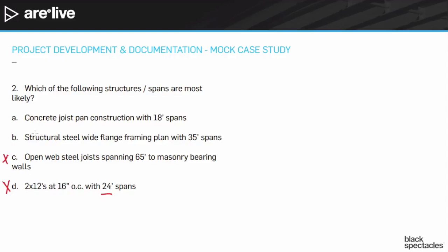So the most likely answer in this scenario would be the wide flanges with a 35-foot span. Wide flanges have a sweet spot anywhere from about 25 to 30 feet up to about 40 feet, possibly a little higher. So if you think of 30 to 40 feet as the sweet spot for most wide flanges, we're going with B: structural steel wide flange framing with 35-foot spans.